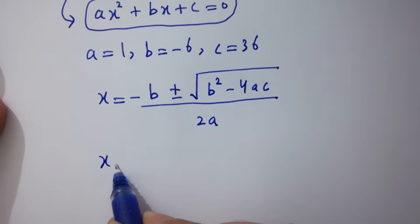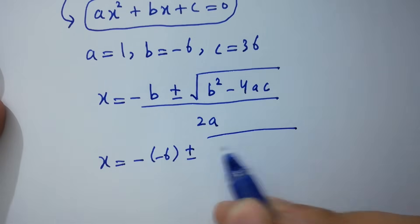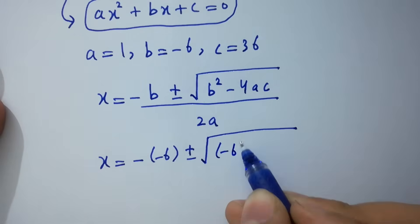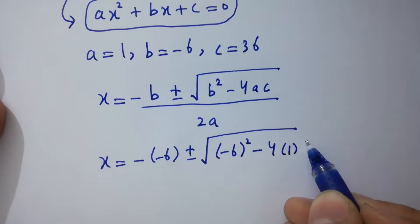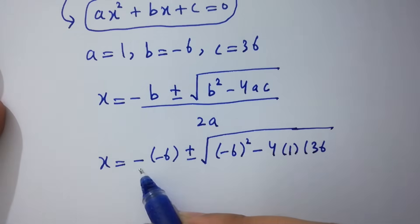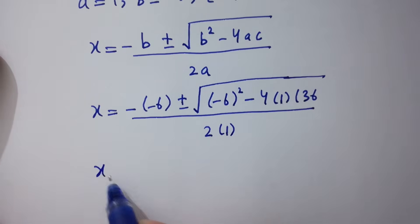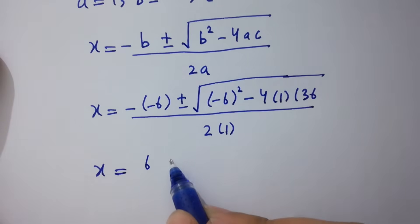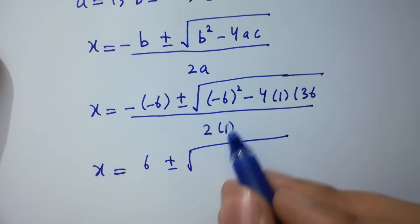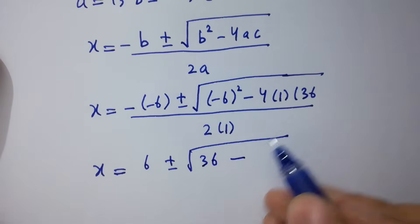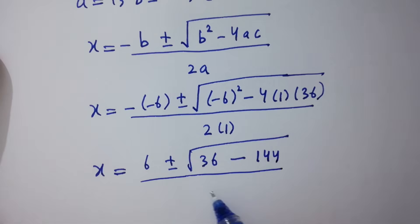Substituting the values: x equals negative (negative 6) plus or minus the square root of 6 squared minus 4 times 1 times 36, all over 2 times 1. That gives x equals 6 plus or minus the square root of 36 minus 144, over 2.